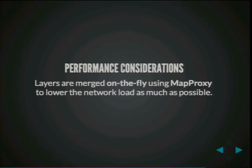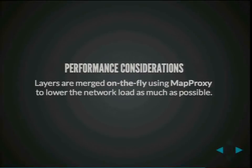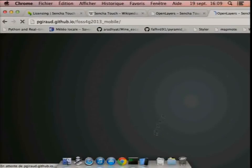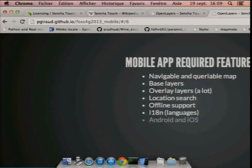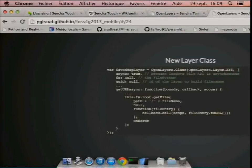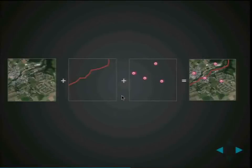We used MapProxy to merge layers both when online and offline. You have a base layer and two other layers, and when we download them to show them offline, we call MapProxy to merge tiles so that we don't have to download too many tiles, and so that panning performance is good.